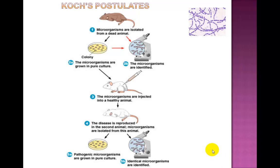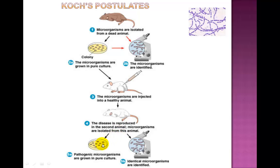When anthrax is isolated from a diseased animal, the bacteria can be identified under the microscope or cultured in the lab — that is what is shown in steps 1, 2a, and 2b. The cultured bacteria can then be re-inoculated into a healthy mouse as shown in step 3, and after the mouse produces the disease as shown in step 4, the bacteria can be re-isolated and re-cultured again in steps 5a and 5b.